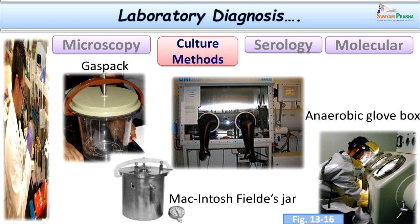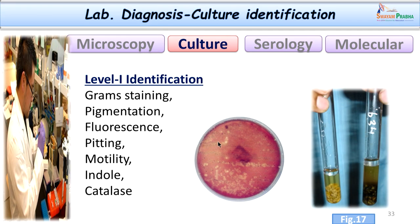Plates must be incubated for a minimum of 48 to 72 hours at 37 degrees Celsius for the bacteria to grow. Non-sporing anaerobes, especially Fusobacteria, are slow growers and may grow only after 72 hours, so it is better to wait another 1 to 2 days for them. The rest will grow within 48 to 72 hours. Once grown, aero tolerance testing is important to differentiate obligate anaerobes from facultative anaerobes, since facultative aerobes will also grow inside anaerobic chambers.